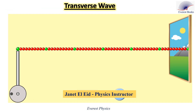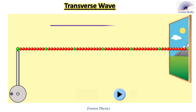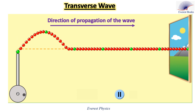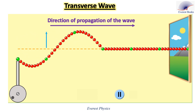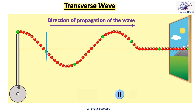In the previous episode, we discussed the properties of mechanical waves. Let's continue our study about waves. In this PHET animation, the source of vibration is going to produce a wave propagating to the right along the rope. I want you to focus on the direction of oscillation of this green particle.